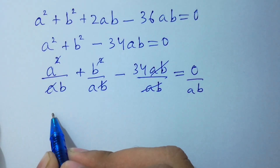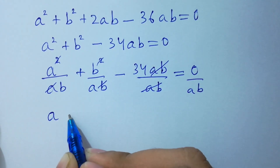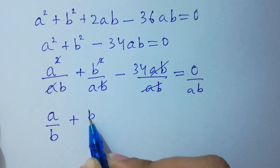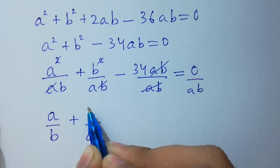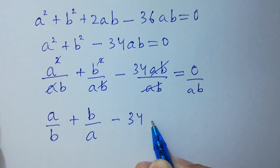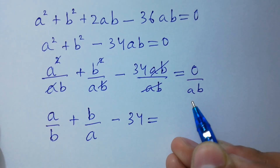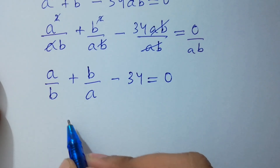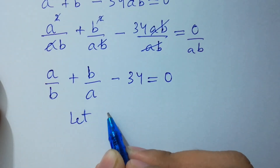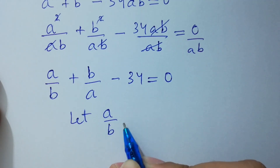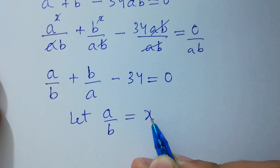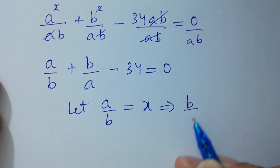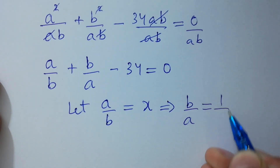We get a over b plus b over a minus 34 equal to 0. Now, let a over b equal to x. By replacing, b over a becomes 1 over x.